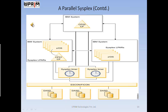A parallel sysplex relies on one or more coupling facilities, called CFs. A coupling facility is a mainframe processor with memory, special channels, and a built-in operating system. It has no output devices other than the special channels and a very small operating system. A coupling facility functions locally as a fast scratch pad and is used for three purposes: locking information shared among all attached systems, and caching information such as for databases shared among all attached systems. Information in the coupling facility resides in memory, and a typical coupling facility has a very large memory.